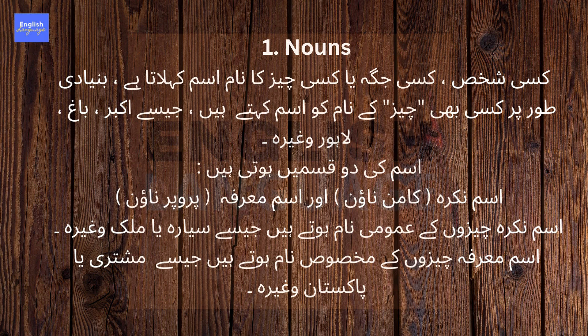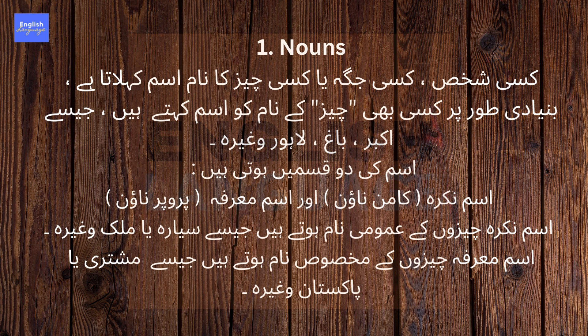Kisi shakhs, kisi jaga, ya kisi chiz ka naam ism kehlata hai. Bunyadi tor par kisi bhi chiz ke naam ko ism kehte hain, jaise Akbar, baag, Lahore waghairah. Ism ki doh qasmein hoti hain: ism nakra yaani common noun, aur ism arfa yaani proper noun. Ism nakra chizo ke amoomi naam hoti hain, jaise saiyara aur mulk waghairah. Jabke ism arfa chizo ke makhsoos naam hoti hain, jaise Mushtari aur Pakistan waghairah.